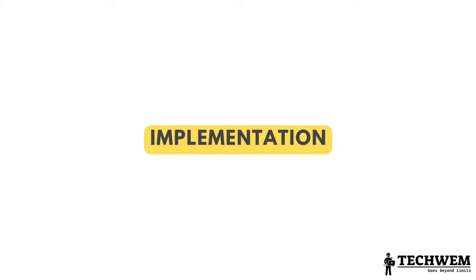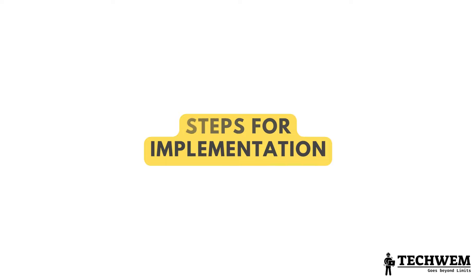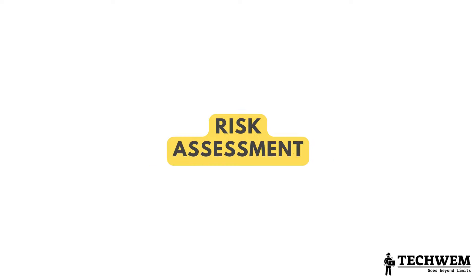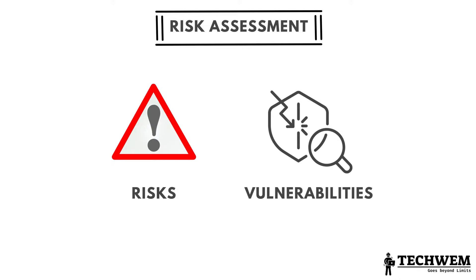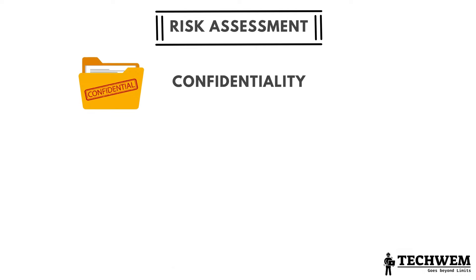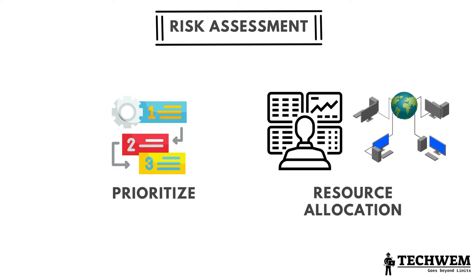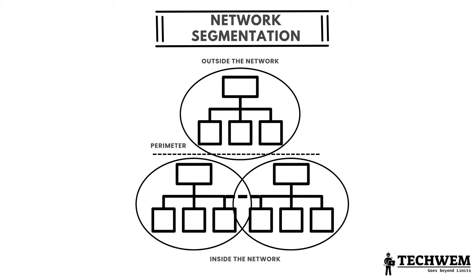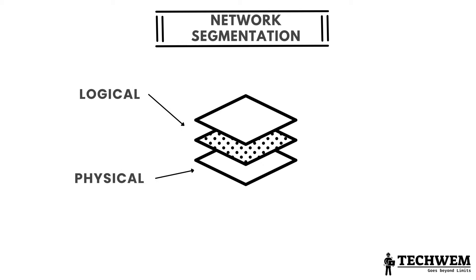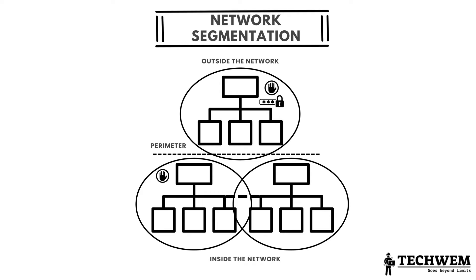Now let's learn how to implement OT cybersecurity. Implementing OT cybersecurity requires a systematic approach. Number 1: Risk Assessment — the process of identifying, analyzing and evaluating potential risks and vulnerabilities within an OT system. It involves assessing the likelihood and potential impact of various threats to the system's confidentiality, integrity and availability. This step helps prioritize security measures and allocate resources effectively. Number 2: Network Segmentation — dividing the OT network into smaller, isolated segments to enhance security. By separating the network into logical or physical segments, the impact of a security breach can be contained, preventing unauthorized lateral movement. Each segment can have its own security controls and access restrictions, limiting the potential damage caused by an attack.